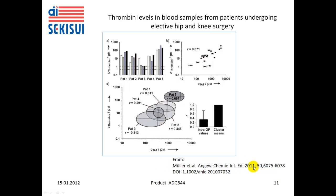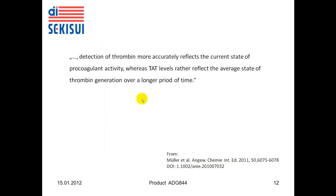Here is the key citation. Müller and colleagues conclude that detection of thrombin more accurately reflects the current state of procoagulant activity, whereas TAT levels — thrombin-antithrombin complex levels — rather reflect the average state of thrombin generation over a longer period of time.